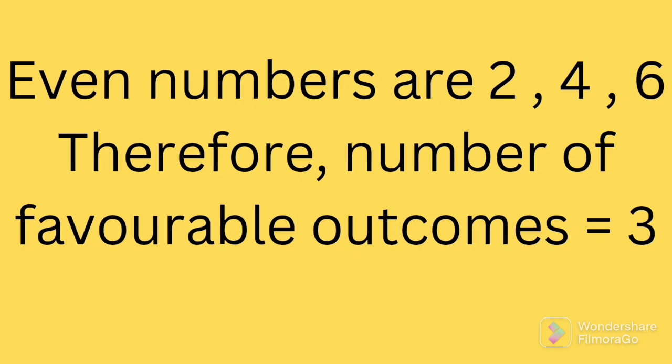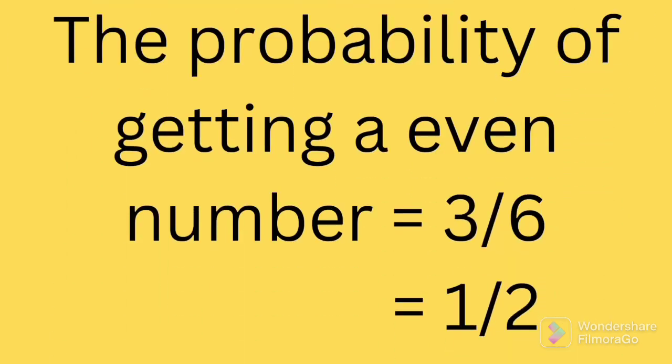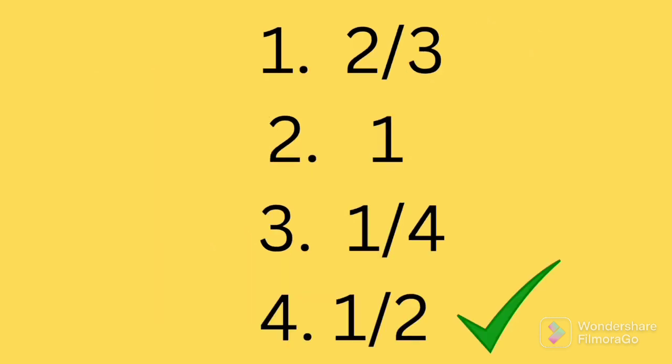Now the probability of getting an even number is equal to 3 by 6, which on simplification gives 1 by 2. So 1 divided by 2 is the correct answer.